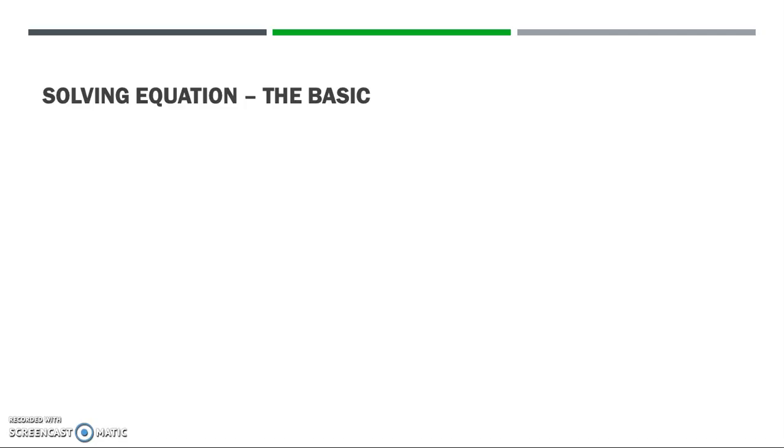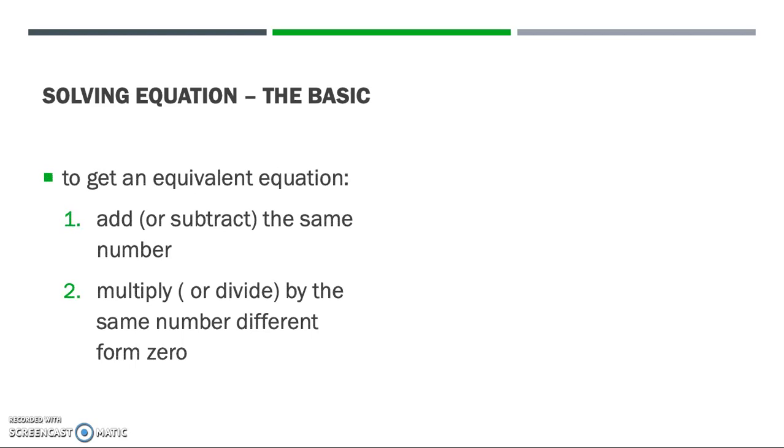To solve an equation means to find all values of the variable that satisfies the equation. When we have two equations that have exactly the same solution, they are called equivalent. And to get an equivalent equation, we do either of the following on both sides of the equality sign: add or subtract by the same number, or multiply or divide by the same number different from zero.